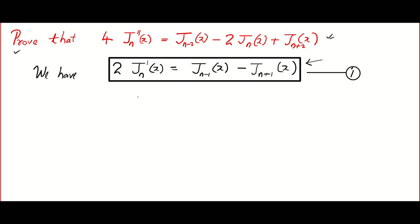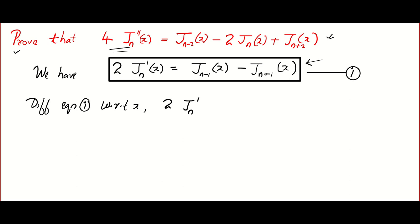So what we do is, if they ask this question in an exam, we write the recurrence relation. The first thing to do is we are going to create the left-hand side of what we have to prove. Differentiating equation 1 with respect to x on both sides: 2 is a constant, the first derivative becomes the second derivative, and the right-hand side becomes Jn-1'(x) minus Jn+1'(x).